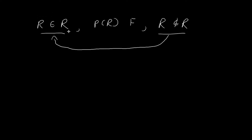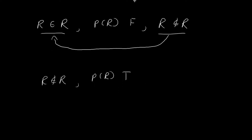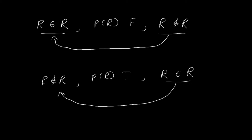Now let us suppose R is not a member of R. If R is not a member of R, that means p of R is true. And if p of R is true, by definition, then R is going to be inside this set — so R is going to be a member of R. This once again contradicts our initial assumption. So in either case, we can simultaneously conclude that R is a member of R and R is not a member of R, which is absurd. And so this is Russell's paradox. The moral of this paradox is that if we are not careful, set theory can easily lead to illogical contradictions.